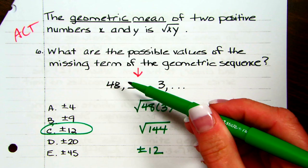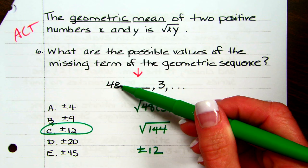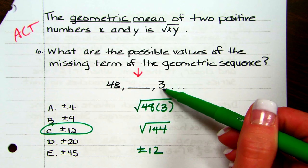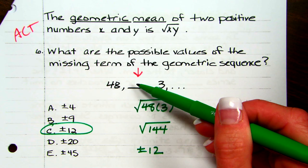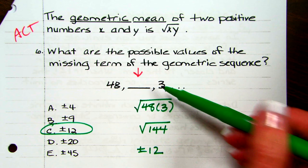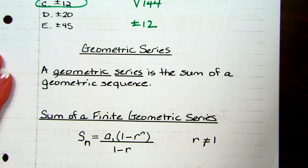The answer is plus or minus 12 because it could be multiplying or dividing by a negative number. For example, 48 divided by negative 4 is negative 12, and then negative 12 divided by negative 4 would be positive 3. So it could be plus or minus.